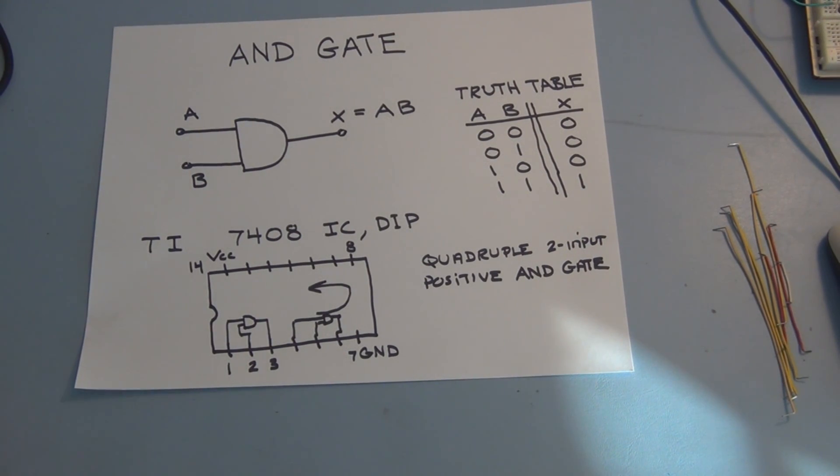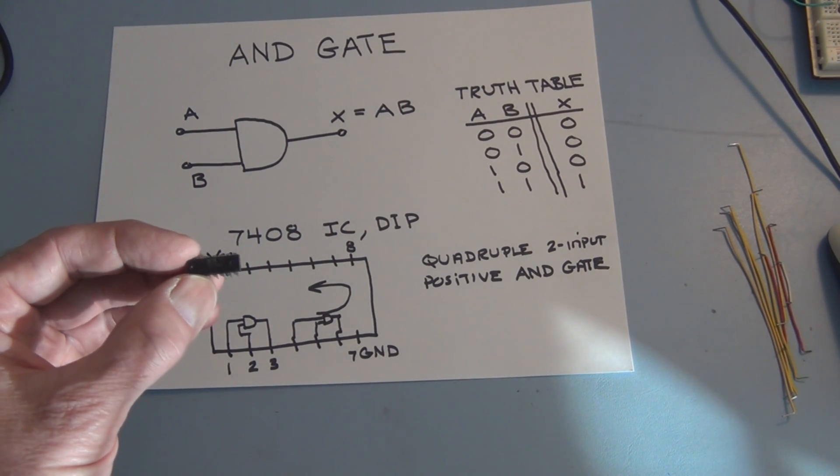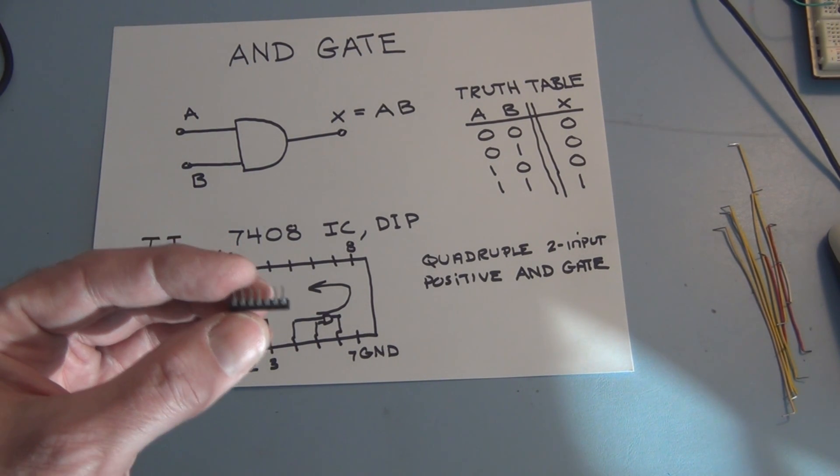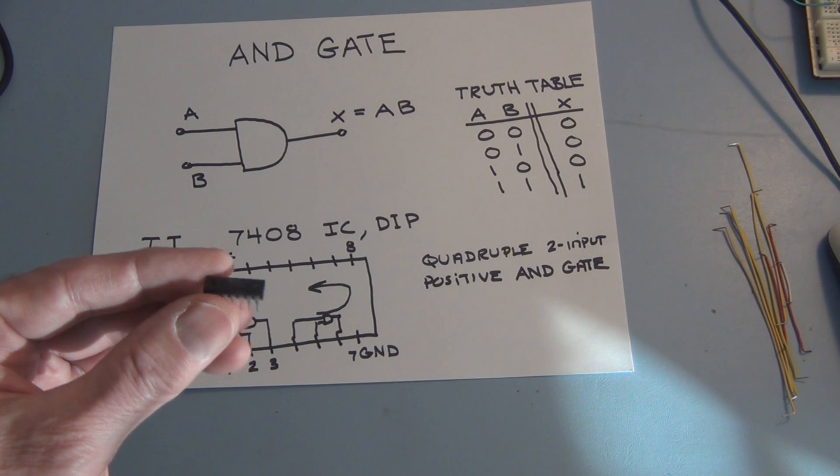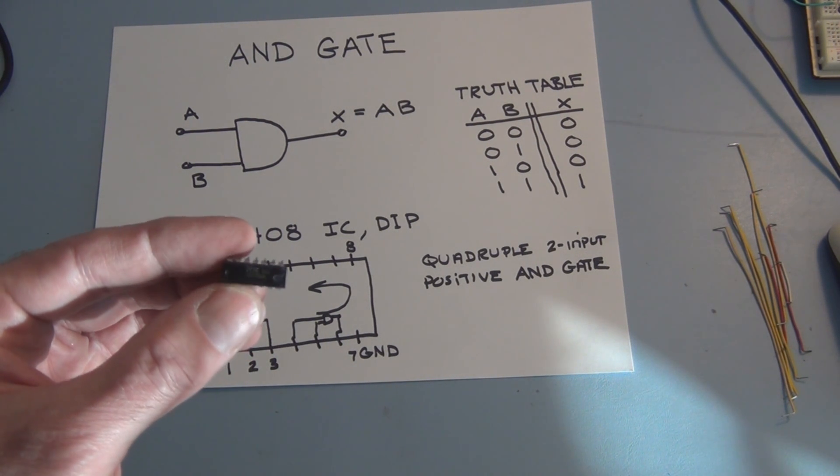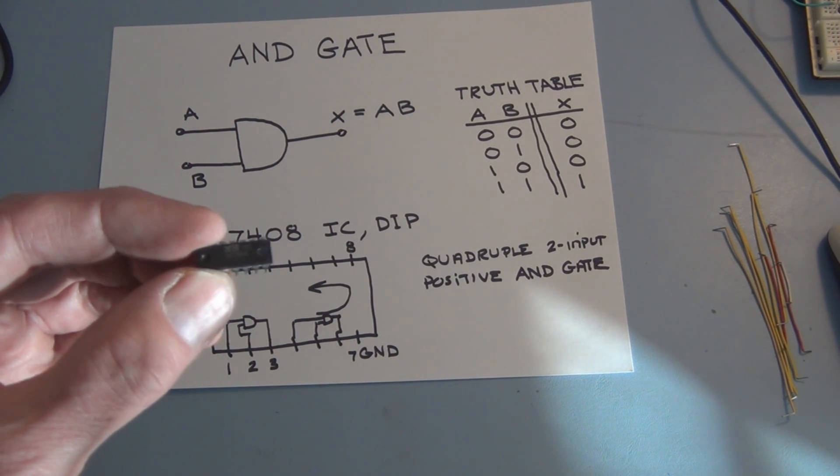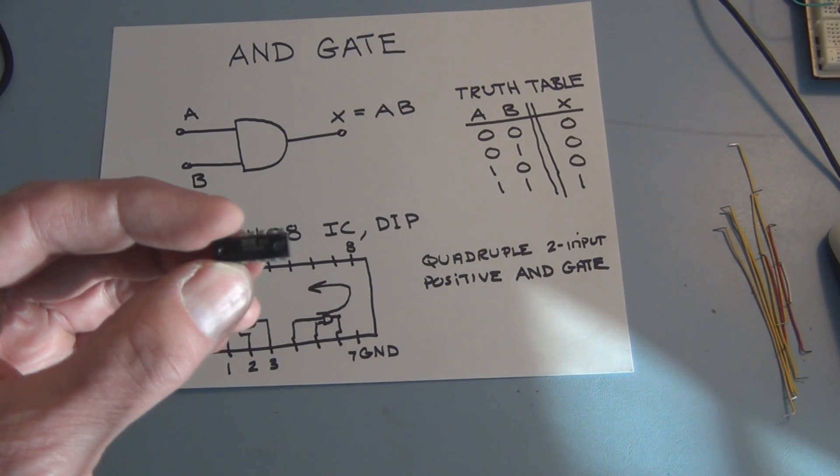The physical device will look something like this. This is a 14-pin device, also known as a dual inline package or DIP. This particular chip is manufactured by Texas Instruments.